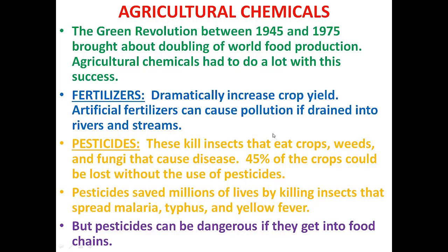Because of increasing population, more food is in demand. To increase world food production, there was a drive between 1945 and 1975 called the Green Revolution, during which more agricultural chemicals — fertilizers and pesticides — were used, doubling world food production. Fertilizers dramatically increase crop yield, but if artificial fertilizers drain into rivers and streams, they cause pollution that kills fish and small invertebrates. Pesticides kill insects that eat crops, weeds competing with crops, and fungi that cause diseases.